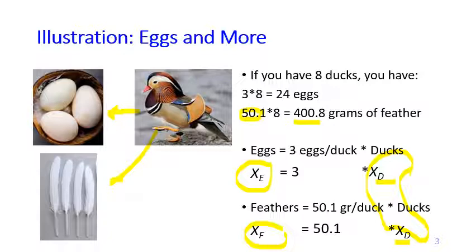So ducks, the unit is the number of ducks, but then eggs, the unit becomes eggs, and then for feathers the unit becomes grams. So this is the key difference between this production process model and the blending model that we've seen last week.